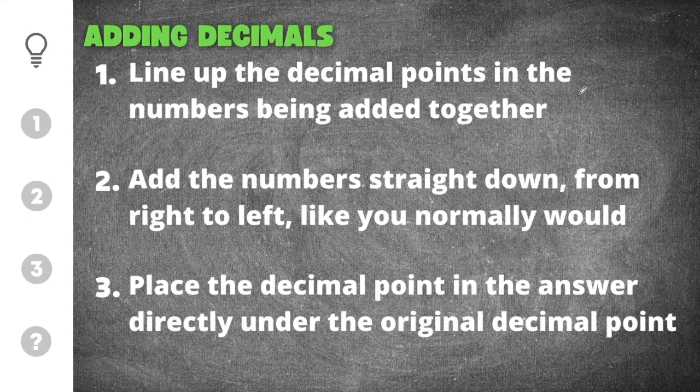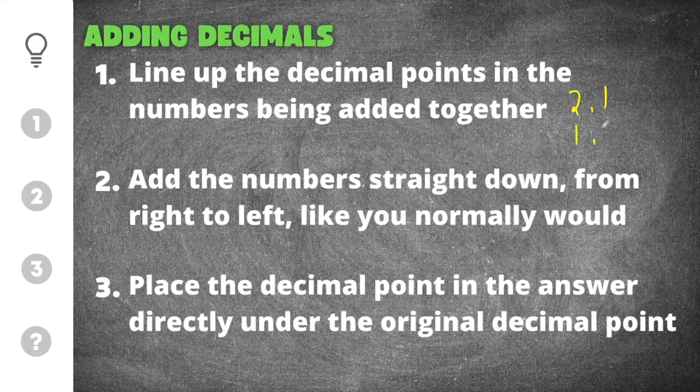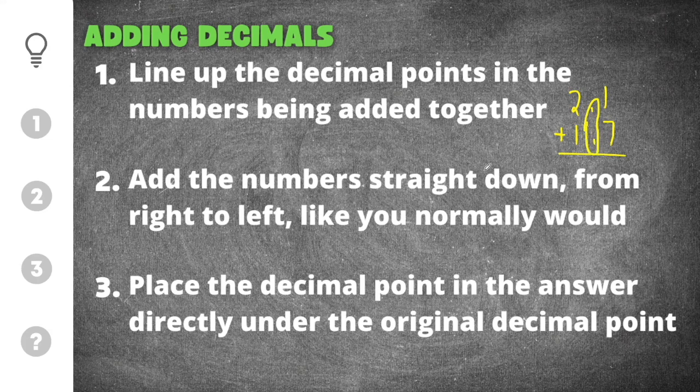You will line them up vertically. For example, let's say we have 2.1 and 1.7. So these decimals here have to be lined up vertically.